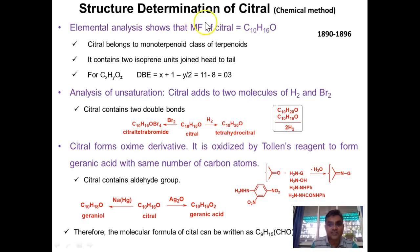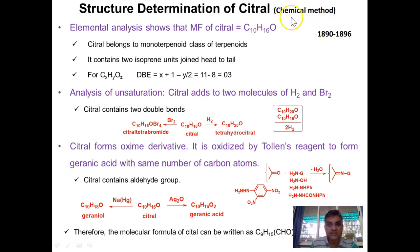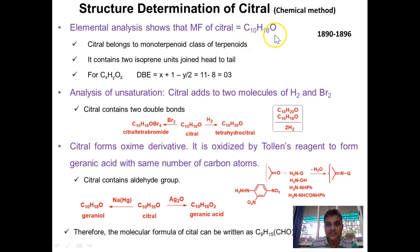Now let us see the structure determination of citral. This was carried out between 1890 and 1896. In those days chemists were not having modern techniques, so they relied on chemical methods of analysis. The first stage starts from isolating citral in a very pure form, then subjecting it to a series of chemical reactions. The first experiment is the estimation of carbon and hydrogen, which gave the molecular formula C10H16O.